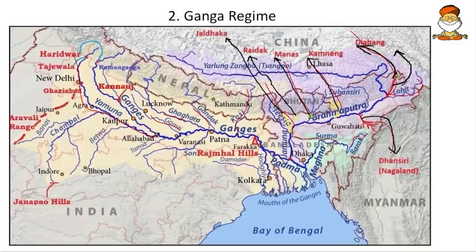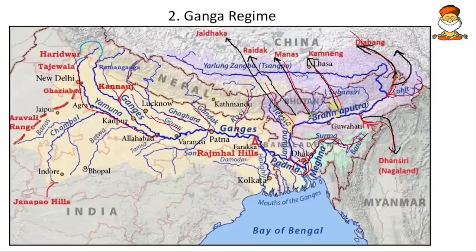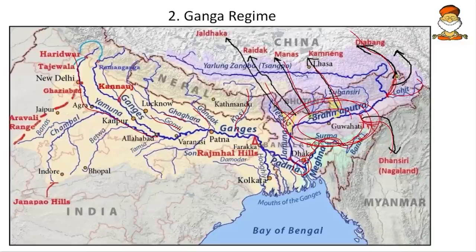Remember that Barak is not a tributary of Brahmaputra or Ganga. It flows through Meghalaya, enters Bangladesh, and later joins the Padma. Padma is the joint river formed after Ganga and Brahmaputra merge. In this region there are many national parks and wildlife sanctuaries — Kaziranga, Manas, Sonai Rupai, Dibru Saikhowa, and Orang — most with high density, located in this area.